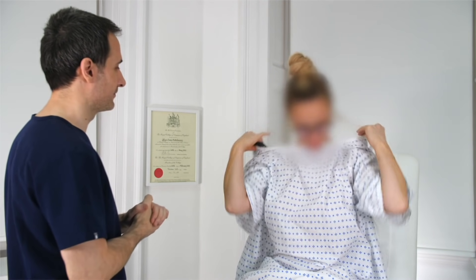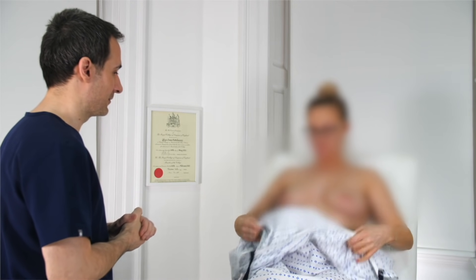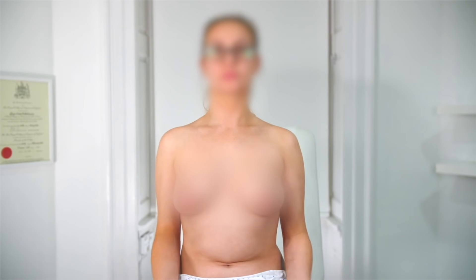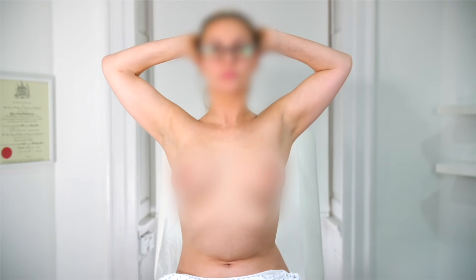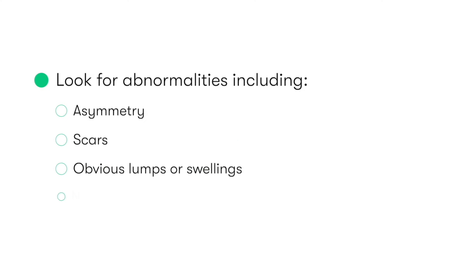For the examination, the patient should be exposed from the waist up. We start by asking them to sit on the edge of the bed so that we can inspect the patient and the breasts. The general inspection of the breasts is done by asking the patient to place their hands behind their head. We then look for any asymmetry, scars, obvious lumps or swellings, and any nipple abnormalities.